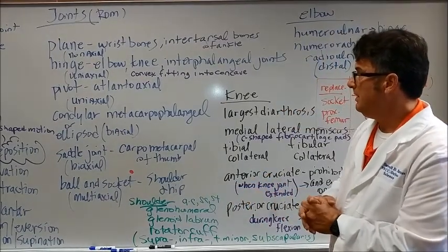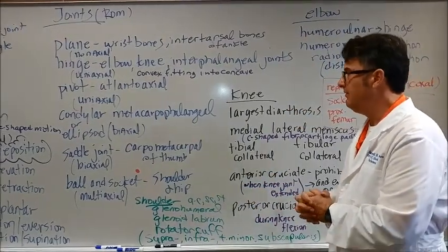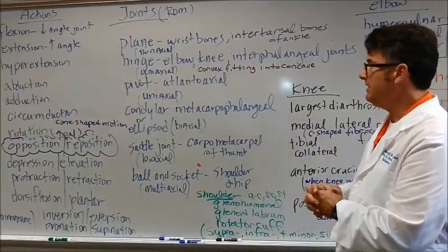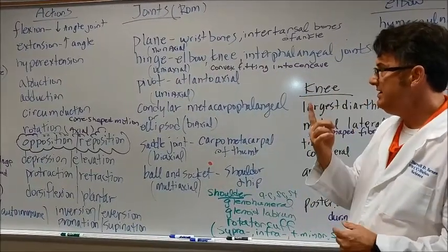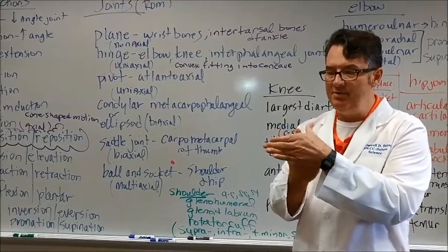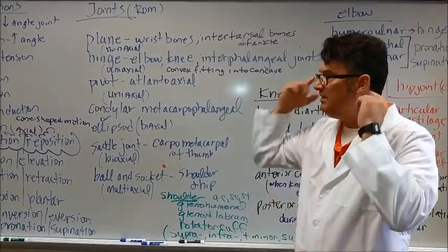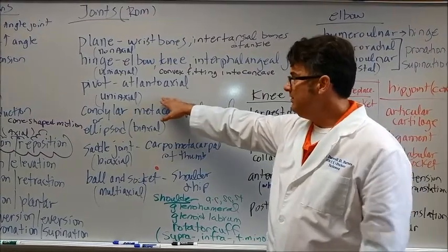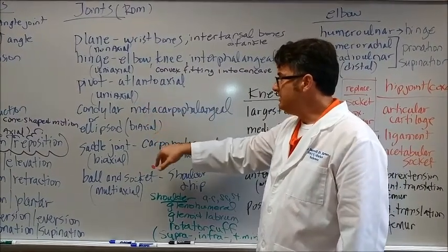Pivot joints. The one that we are featuring right now is the atlantoaxial articulation. Remember the C2 vertebra has an odontoid process that allows the atlas to move and pivot around that one. It's in the upper neck. This is a uniaxial articulation joint.